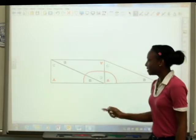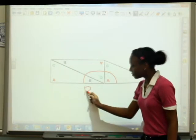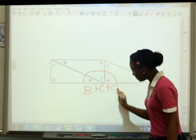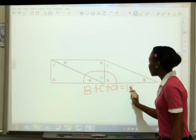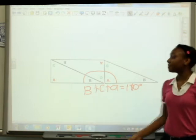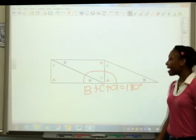Which means B plus C plus A is 180 degrees. Therefore, the sum of interior angles of a triangle is 180.